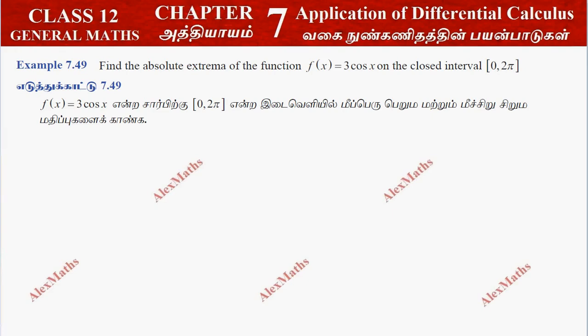Hi students, this is Alex here. Example 7.49: Find the absolute extreme — absolute maximum and minimum — of the function f(x) = 3cos(x) on the closed interval [0, 2π].